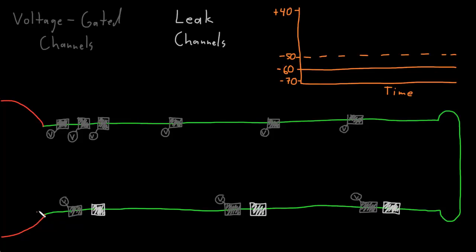I've drawn a soma here in red and one axon in green, and I've blown up the axon to a very large size just to have room to draw. Here's a graph of the membrane potential on the y-axis and time on the x-axis. I've put a couple of different kinds of ion channels in the membrane: leak channels in lighter gray, which are open all the time and not gated. To talk about the action potential, I need to introduce an entirely new type of channel, drawn in dark gray with a little v.